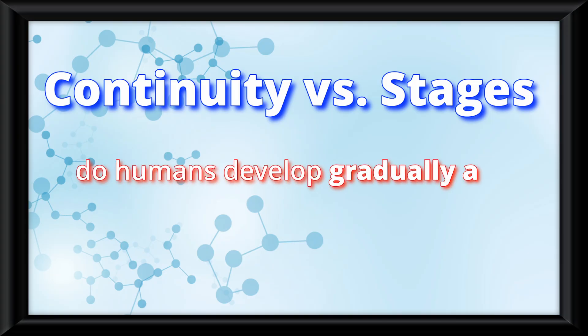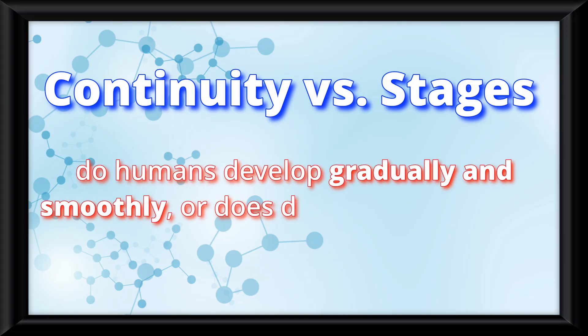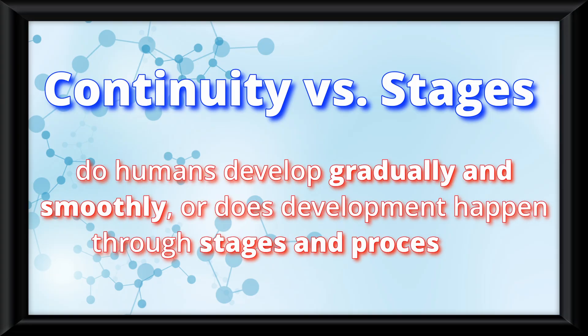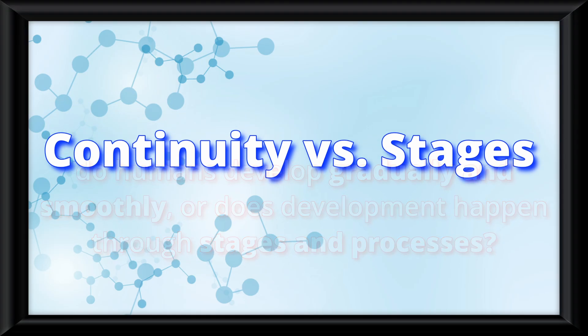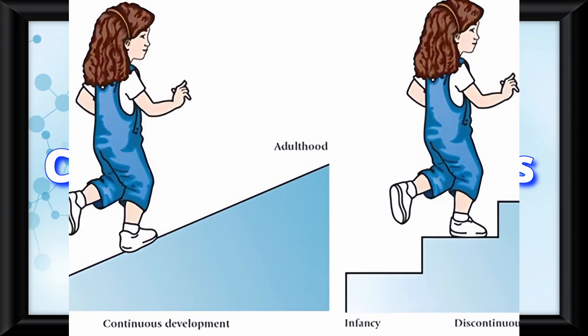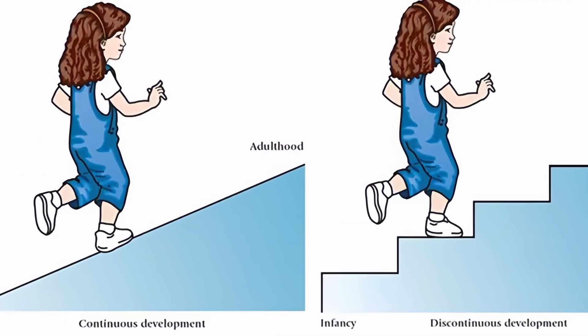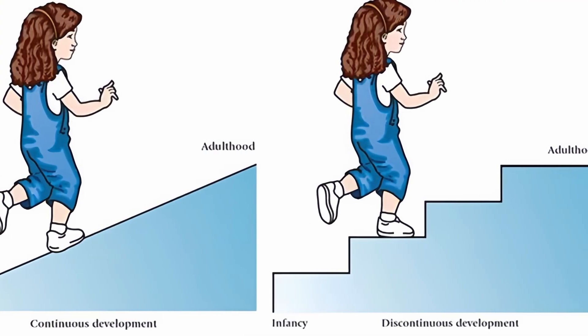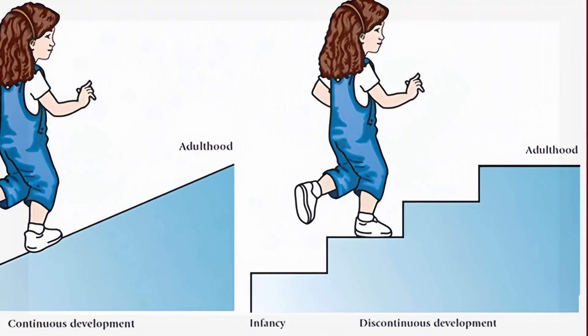Finally, the last debate: Do humans develop gradually and smoothly, or does development happen through stages and processes? The point here is that psychologists debate which traits develop smoothly versus which develop in jumps.